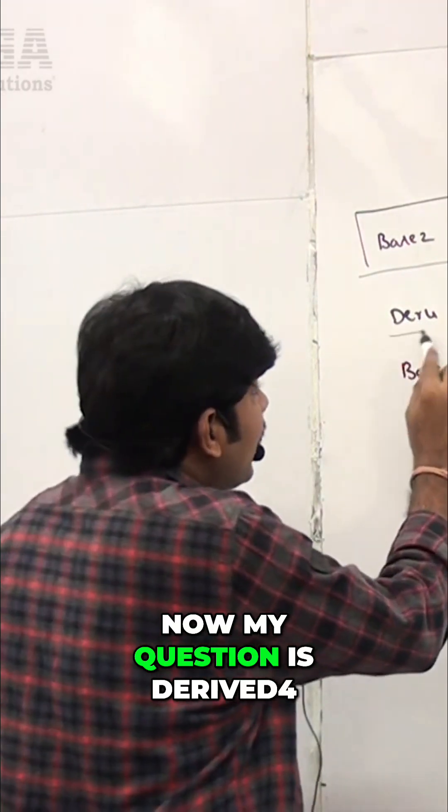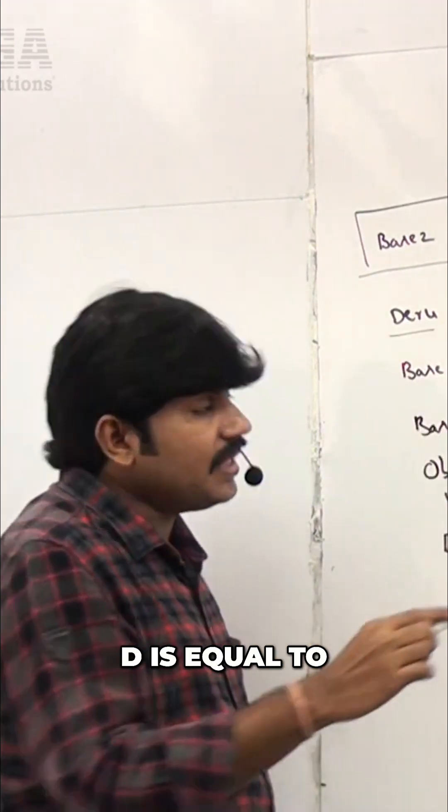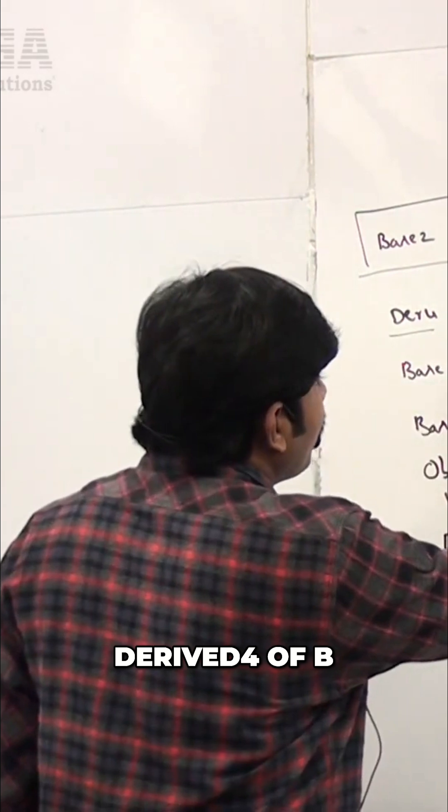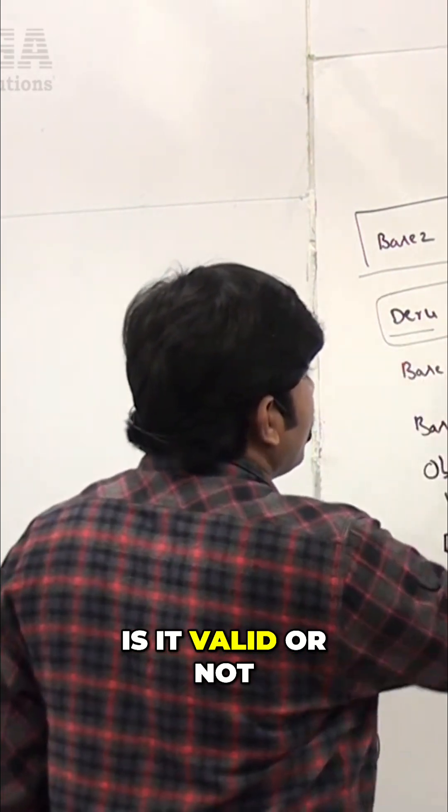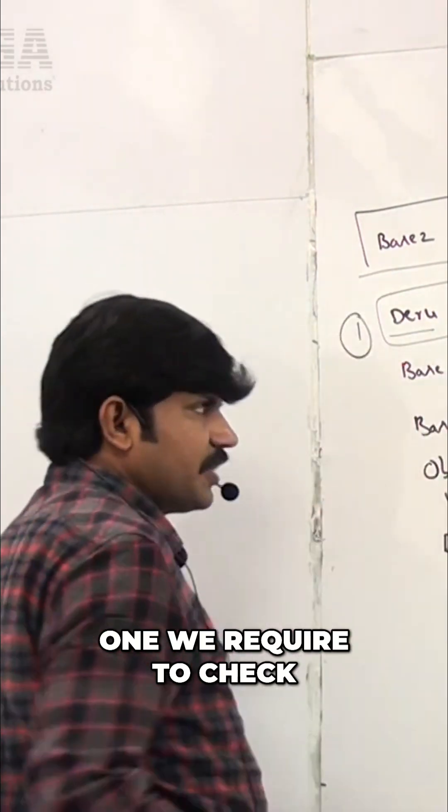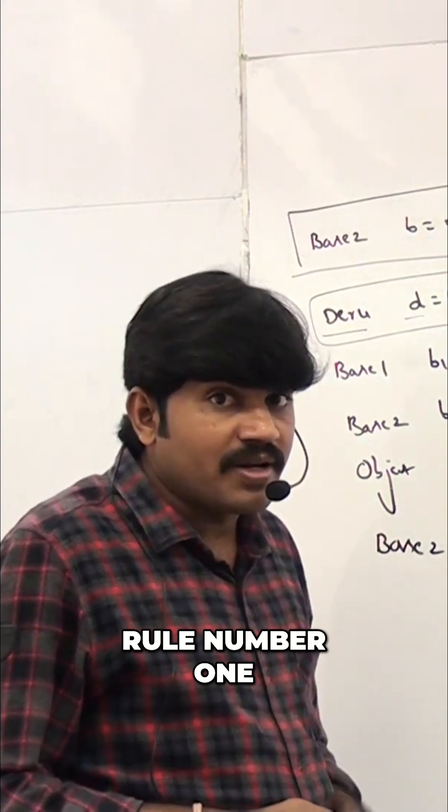Now my question is: derived4 d = derived4 of b, is it valid or not? This is the first one we're required to check. Rule number 1: the type